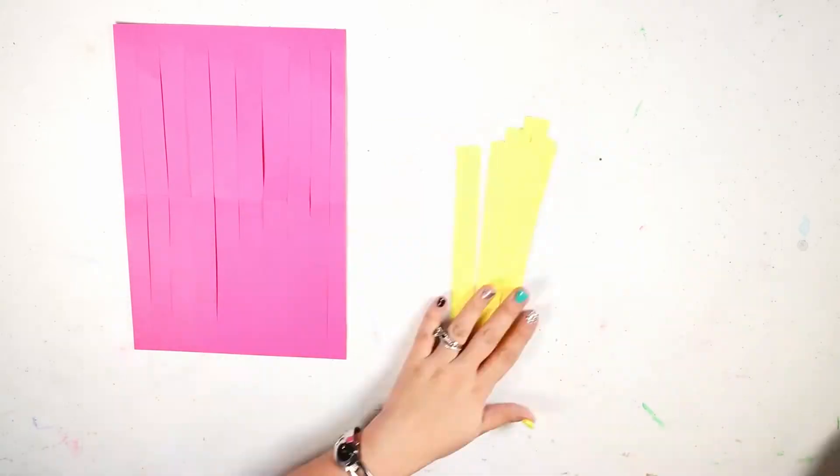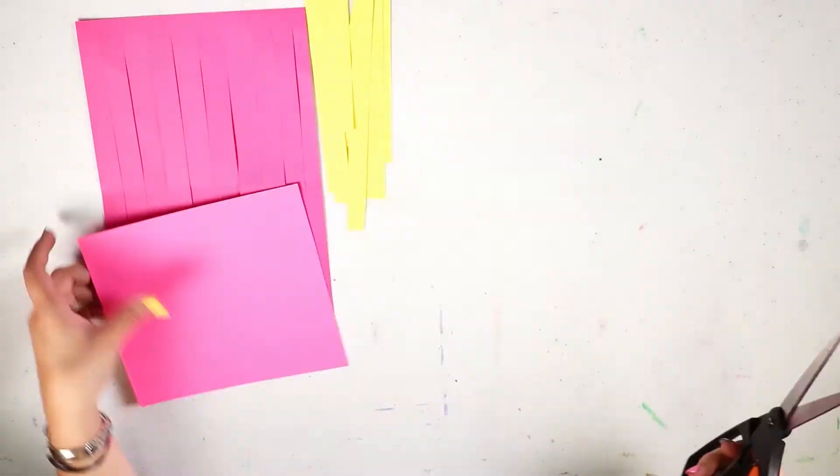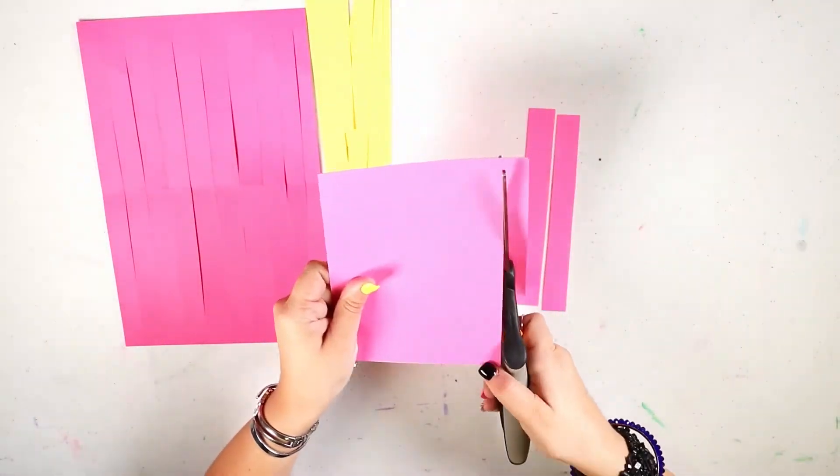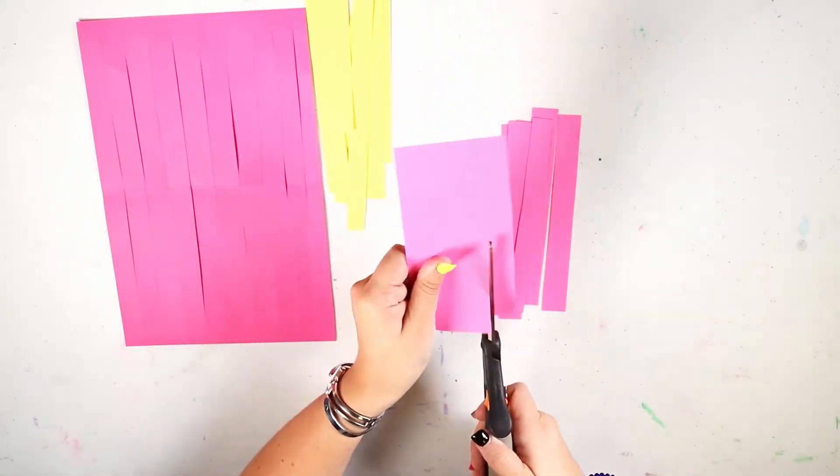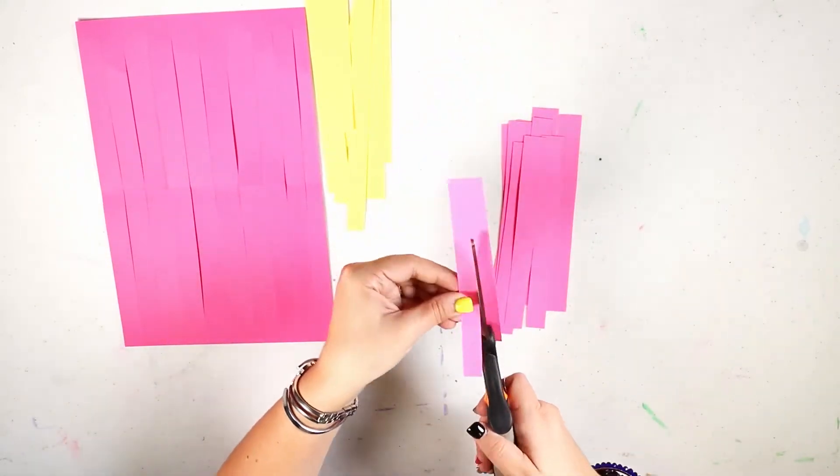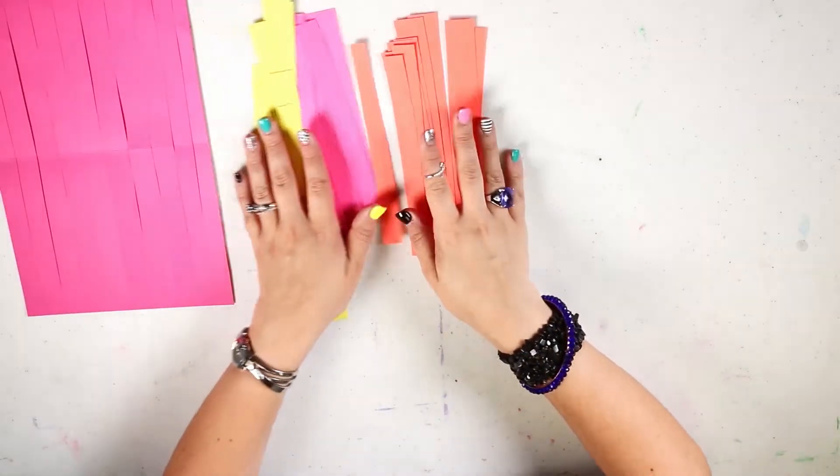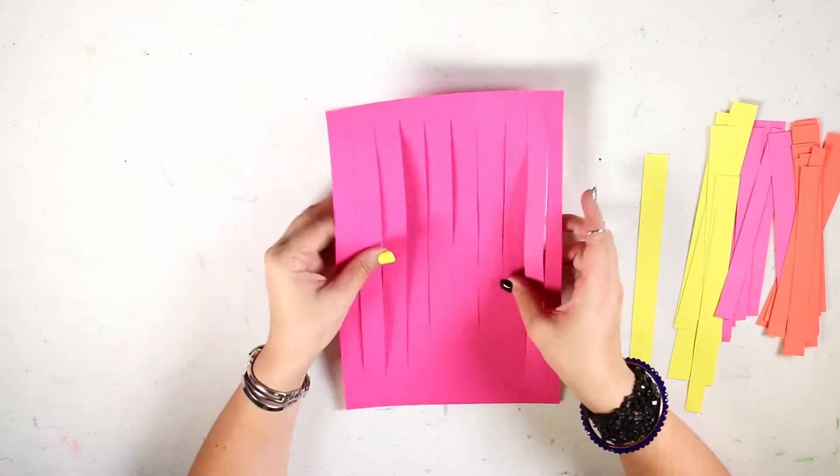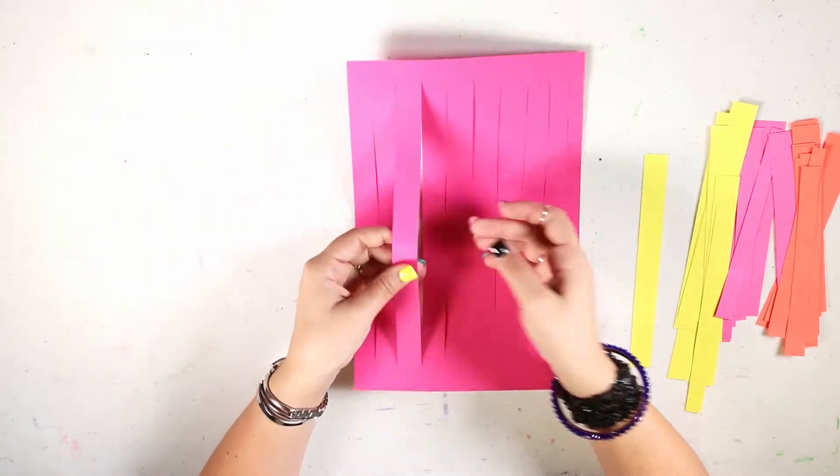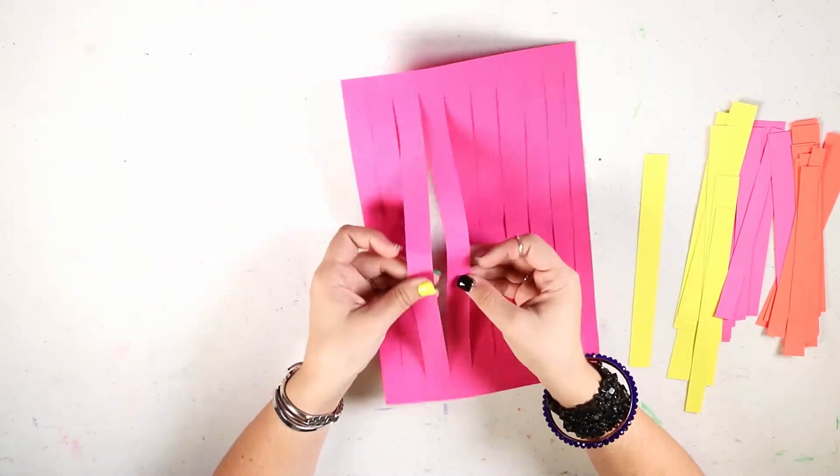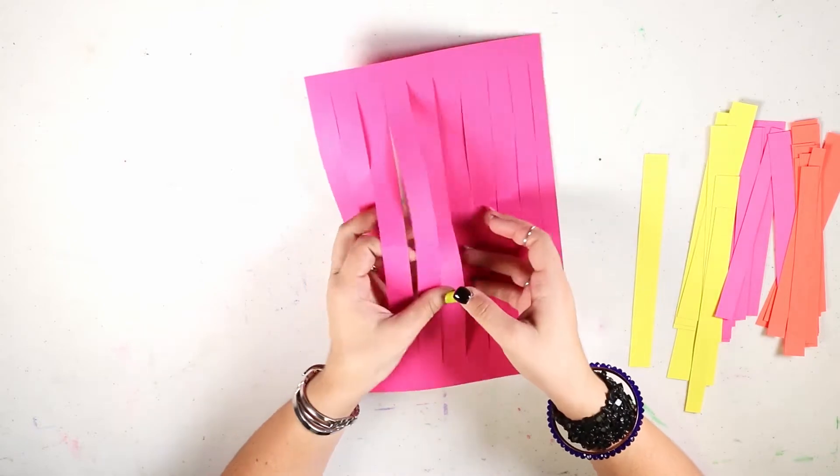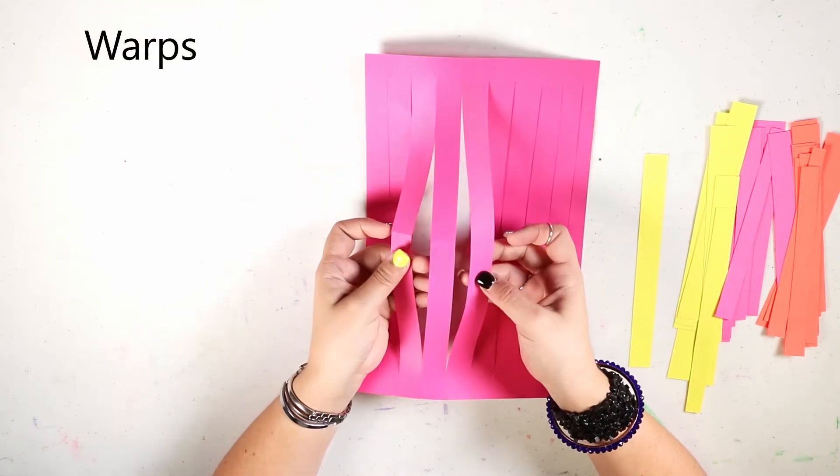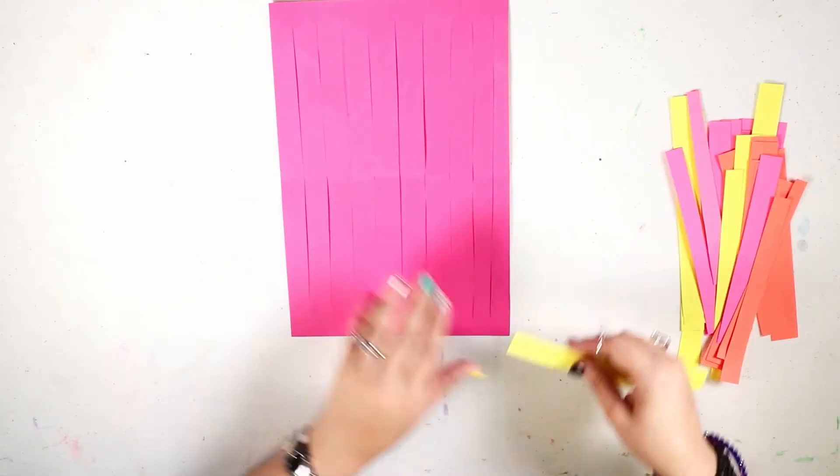This weaving, I decided to work with three different colors. So my loom is dark pink and then I've got yellow, light pink, and an orange. When you have all your pieces cut, you're going to take your loom and you've got all these little different pieces of paper that aren't completely cut off. These are called warps. So your warps are going to help you create your weaving.